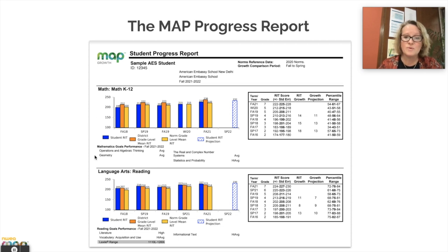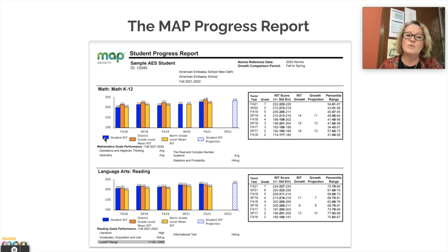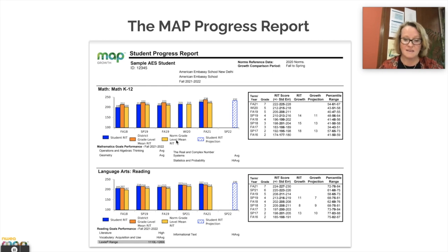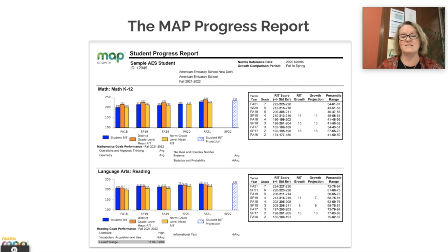When you get this score, you will see numbers. These are the RIT scores which I was referring to. The blue is how your student performed on the MAP assessment this fall. The orange is the average for AES — it says 'district grade level,' which represents AES students at your student's grade level. And then the yellow is the norm — that is all of the students across the world that have taken the MAP assessment. We are looking at 40 million test events, so that is the average across the world.